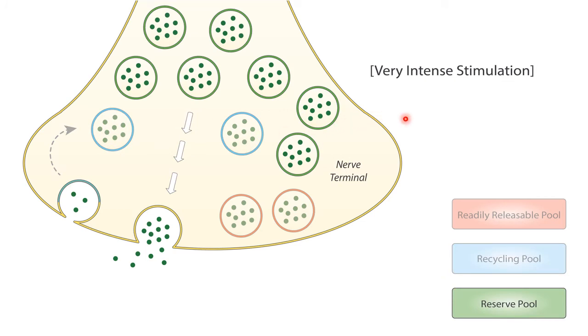Finally, the third pool is termed reserve pool, which is a subset of vesicles whose exocytosis is very rare and is only triggered during extremely intense stimulation.